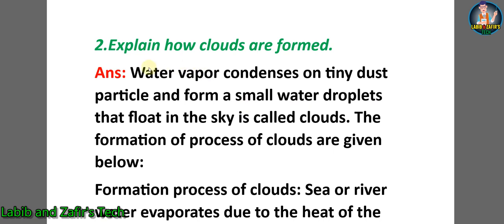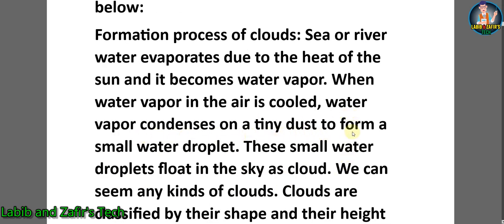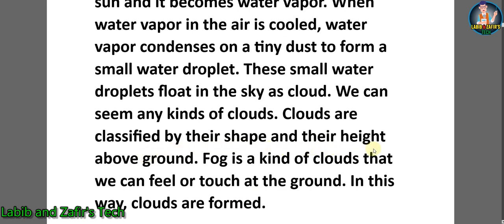Question two: explain how clouds are formed. Answer: water vapor condenses on tiny dust particles and forms small water droplets that float in the sky — this is called clouds. The formation process of clouds: sea or river water evaporates due to the heat of the sun and becomes water vapor. When water vapor in the air is cooled, it condenses on tiny dust particles to form small water droplets. These small water droplets float in the sky as cloud. Clouds are classified by their shape and height above the ground.